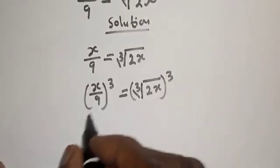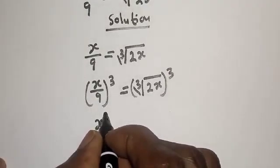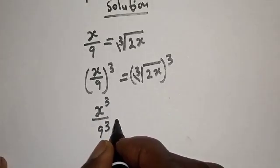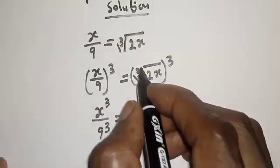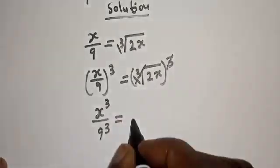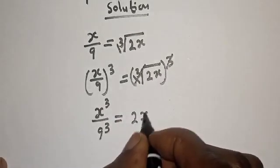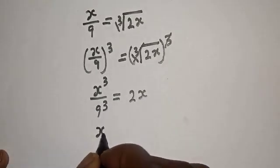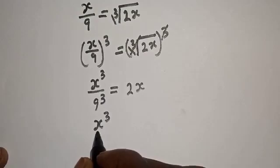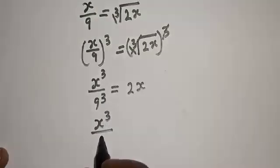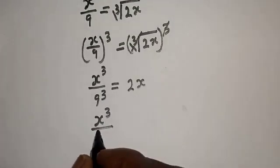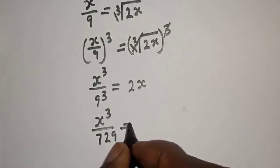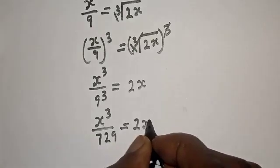And this gives us x raised to the power of 3 over 9 raised to the power of 3, which is 729, is equal to 2x — because the cube and the cube root cancel each other.